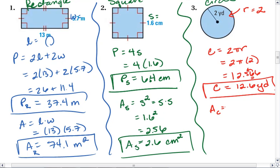Lastly, I want to find the area of the circle, which is pi r squared. I substitute 2 in for our r. So I get pi times 2 squared.